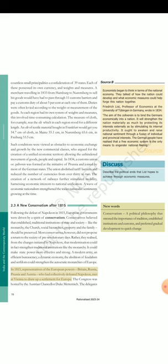In 1815, representatives of the European powers — Britain, Russia, Prussia and Austria — who had collectively defeated Napoleon, met at Vienna to draw up a settlement for Europe. The Congress was hosted by the Austrian Chancellor Duke Metternich. Economists began to think in terms of the national economy. They talked of how the nation could develop and what economic measures could help forge this nation together. Friedrich List, professor of economics at the University of Tübingen in Germany, wrote in 1834: 'The aim of the Zollverein is to bind the Germans economically into a nation. It will strengthen the nation materially as much by protecting its interests externally as by stimulating its internal productivity. It ought to awaken and raise national sentiment through a fusion of individual and provincial interests. The German people have realized that a free economic system is the only means to engender national feeling.' Describe the political ends that List hopes to achieve through economic measures. Discuss.